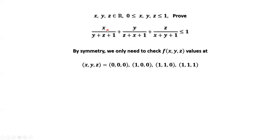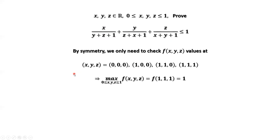If we replace x, y, z by one-third, one-third, one-third, then the left-hand side is zero. The maximum value, by checking these four points, is one — for example, f at (1, 1, 1).